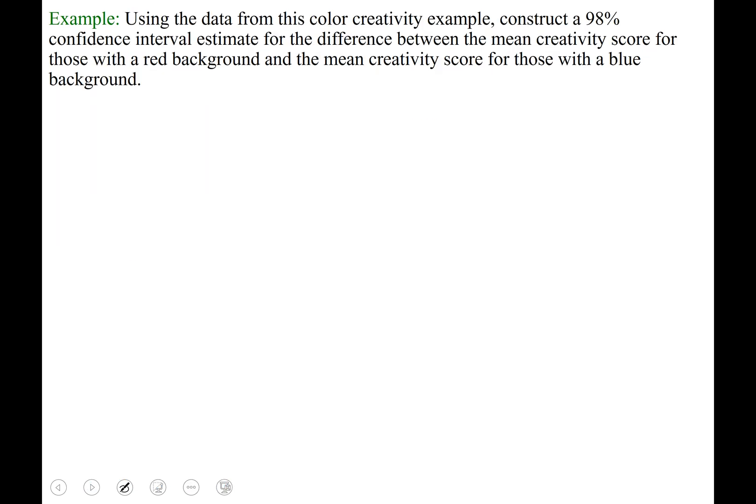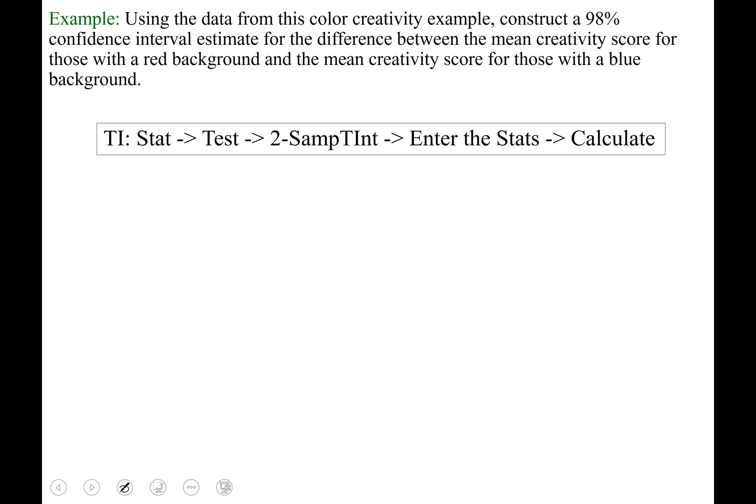I'm going to move on to the next example. Using the same data though, from the color creativity example, this time we're being requested to construct a 98% confidence interval estimate for the difference between the mean creativity score for those with red backgrounds and the mean creativity score for those with a blue background. We are tasked with constructing a confidence interval, so we are going to run 2 sample t interval.